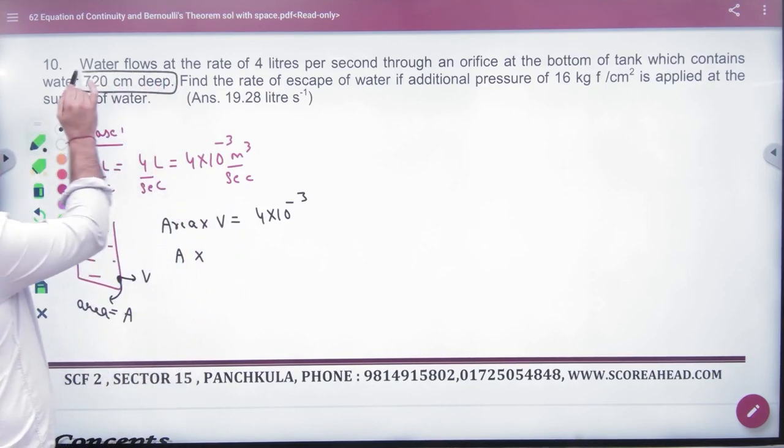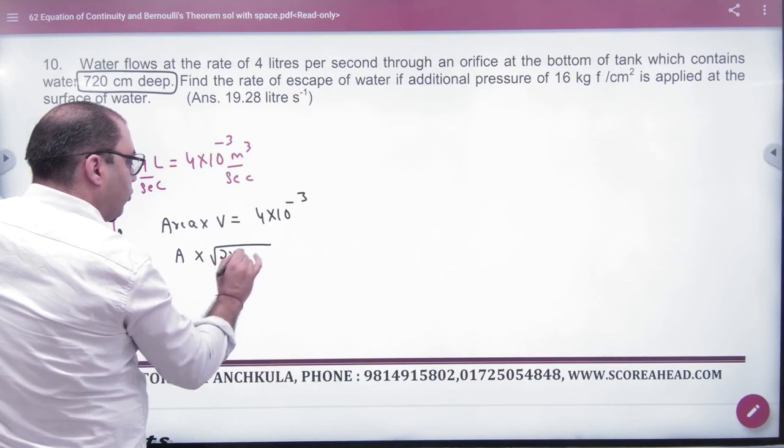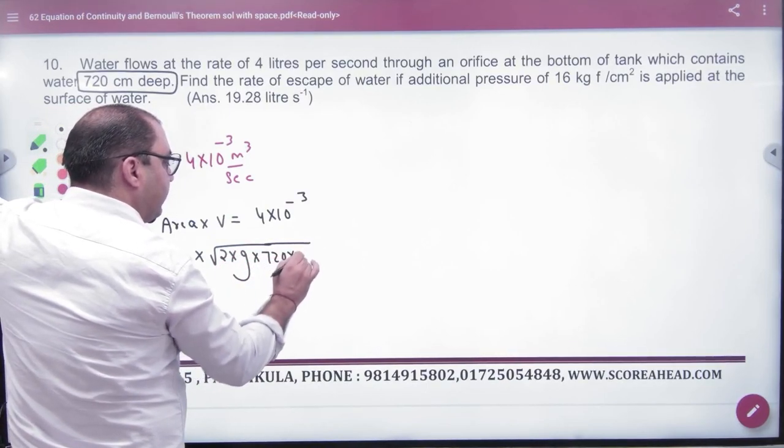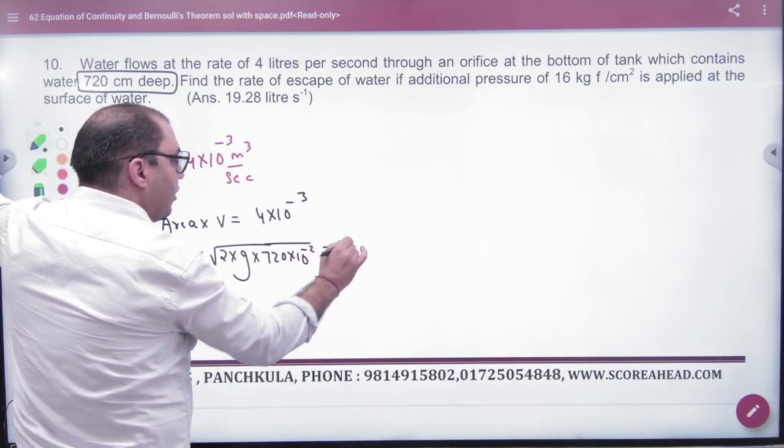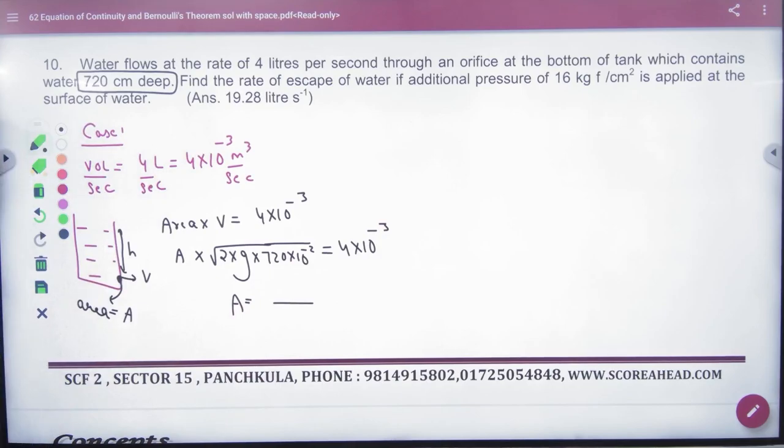Velocity, how deep is it? 720 cm deep. That means H. What is velocity? 2 into G into H. 720 cm means 10 to power minus 2 meter. 4 into 10 to power minus 3, what is orifice area? Clear here, case number 1 closed.